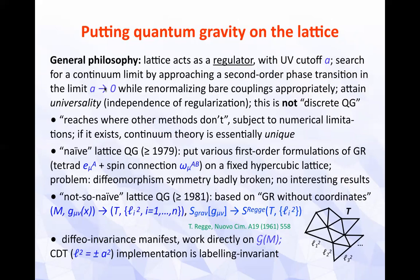If all goes well, one in this way attains a continuous theory that is universal — independent of the details of the regularization — and also essentially unique in the sense that you only need to fine-tune a small number of coupling constants. I should warn you that this is not discrete quantum gravity in two senses: the geometries that enter are continuous objects — non-smooth but continuous — and no assumption of fundamental discreteness is used anywhere in this approach. The discreteness that appears is a regulator that is taken away in the end.